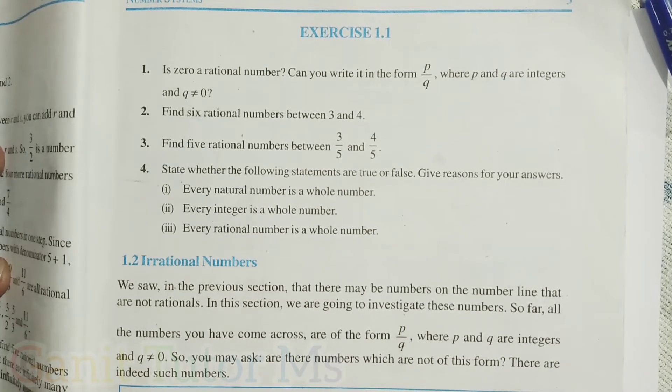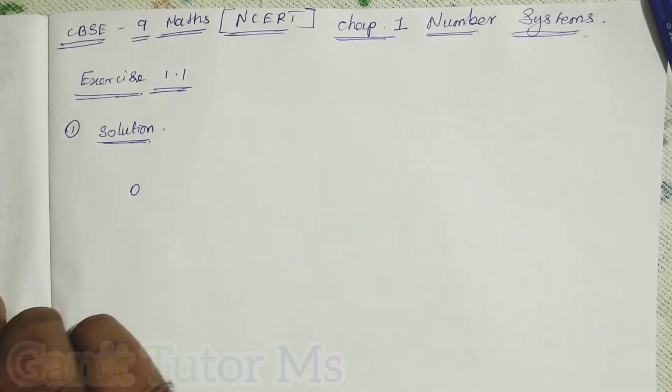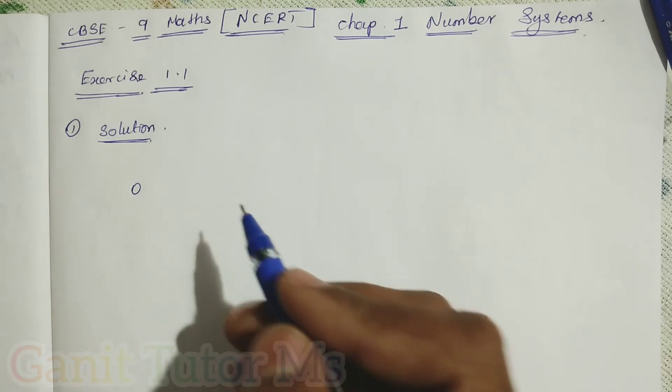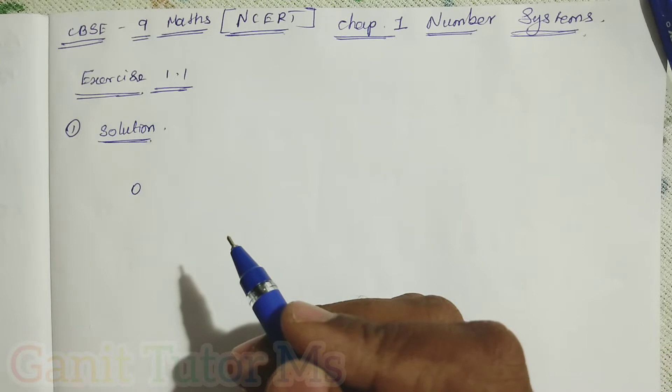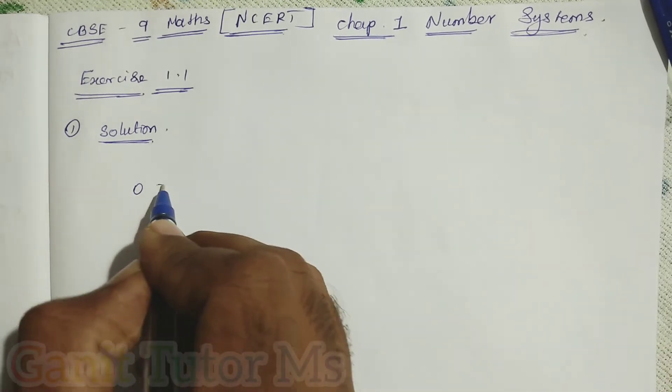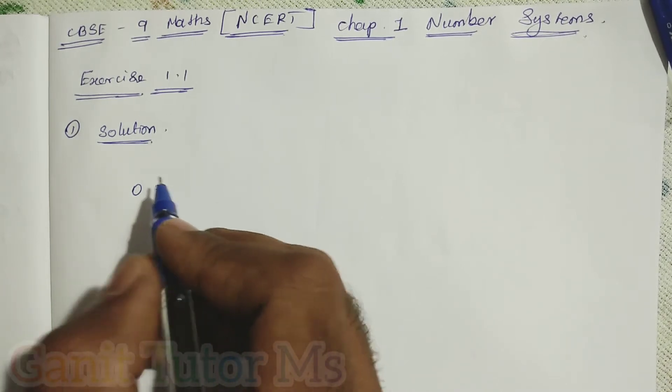Now, we can answer the question. Here, 0. As per the definition of a rational number, a number can be expressed in the form of p by q is a rational number, where p and q are integers. So now here it is 0. We can check whether 0 can be written in the form of p by q or not.